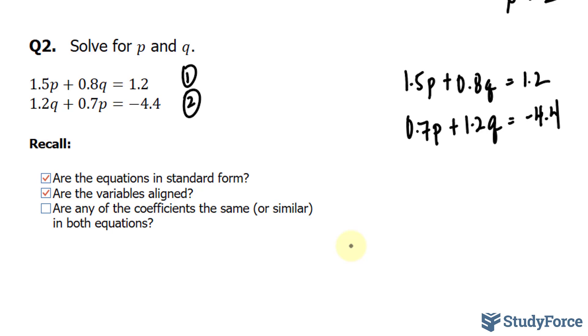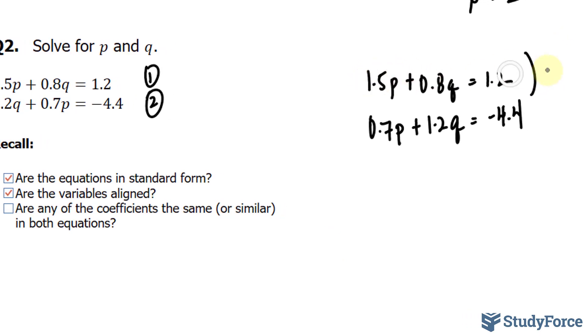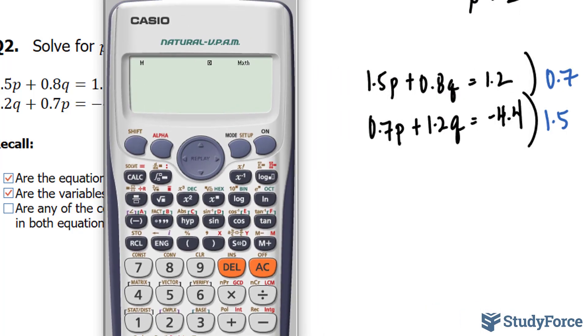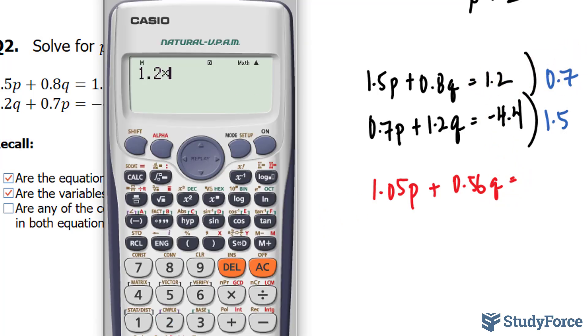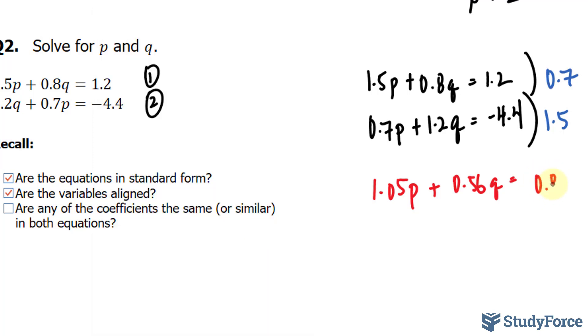If we forecast that we want to eliminate p, then we have to make the coefficients of p the same. So I'm going to multiply the top equation by 0.7 and the bottom equation by 1.5. This is a clever way to make the coefficients the same in the two equations. So if we multiply each of these terms by 0.7, I'll show you a few, and then I'll just update the two equations. 1.5 times 0.7 gives 1.05p. And 0.7 times 0.8 gives 0.56q. 1.2 times 0.7 gives us 0.84. And you get the idea.